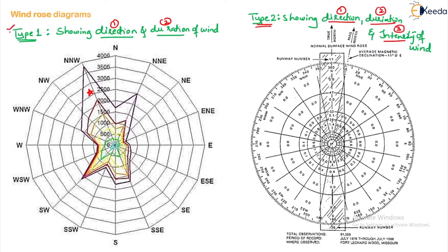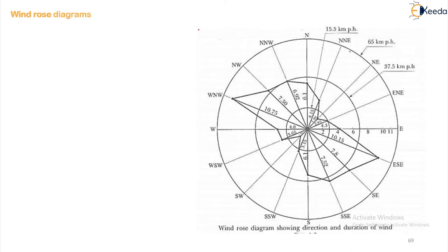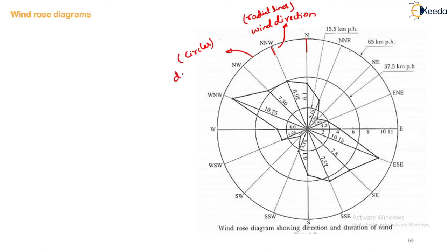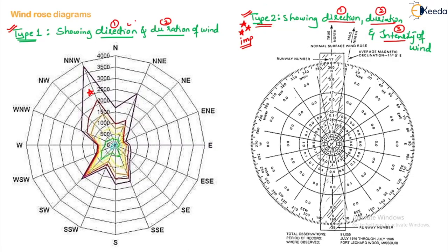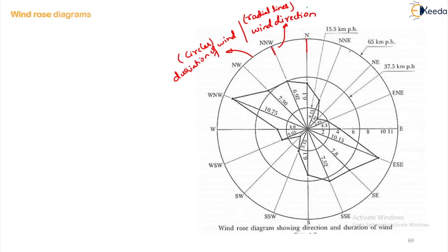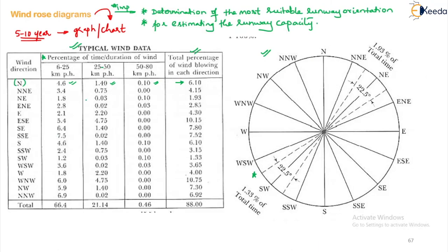Let us now discuss Type 1 and Type 2 wind rose diagrams in detail. Type 2 is of the most importance, but we will study both. In Type 1, the radial lines indicate wind direction and each circle represents the duration of wind at a certain scale. From the wind data table, the total percentage of wind blowing in the north direction is 6.10, and accordingly this point is marked along the north direction.